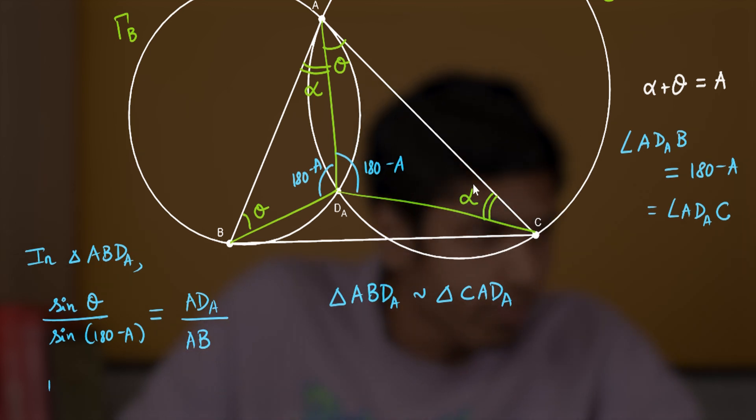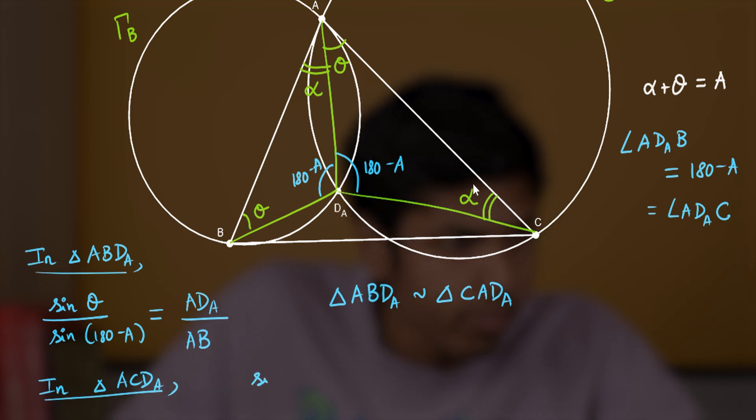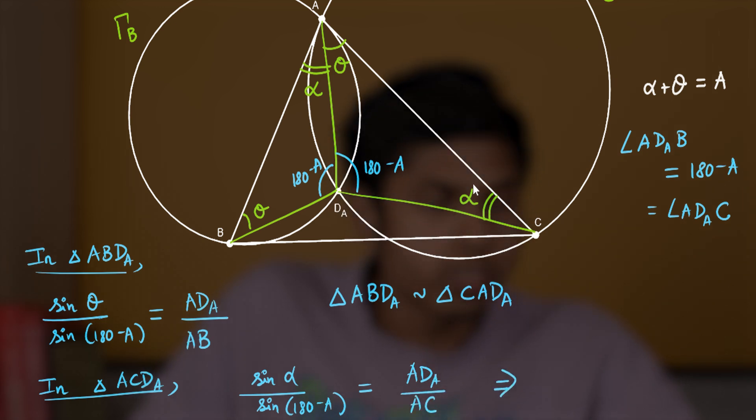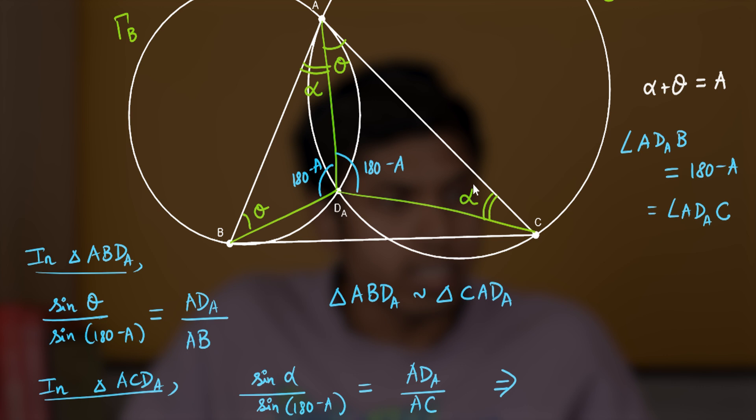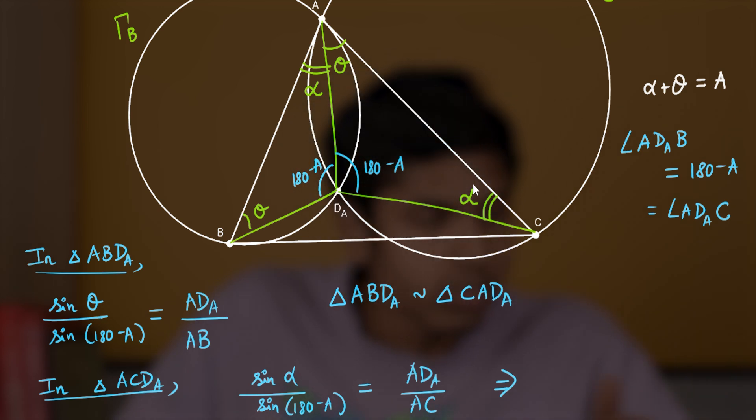Now coming to triangle ACD_A, we get sine alpha by sine 180 minus A equals AD_A by AC. This is also sine rule in triangle ACD_A. Now dividing these two we get sine theta by sine alpha equals AB by AC.